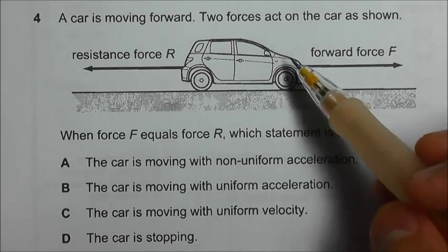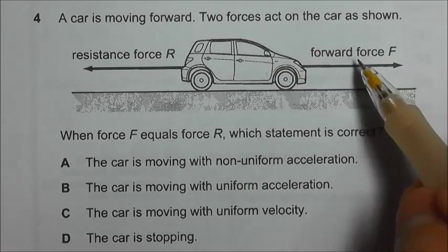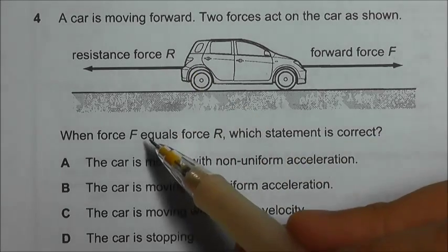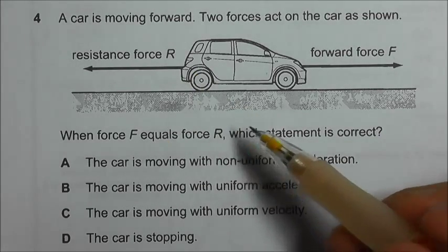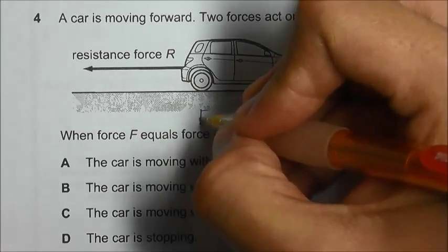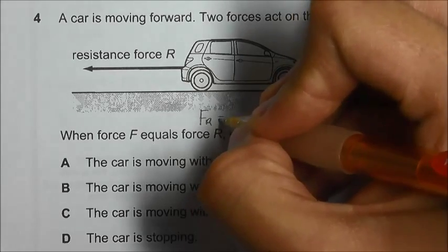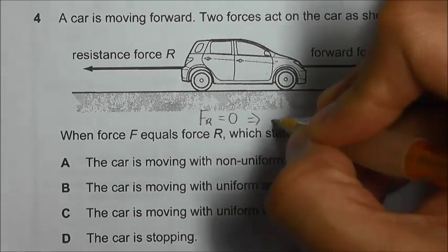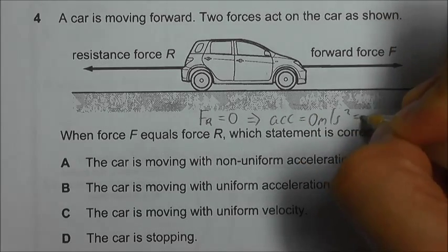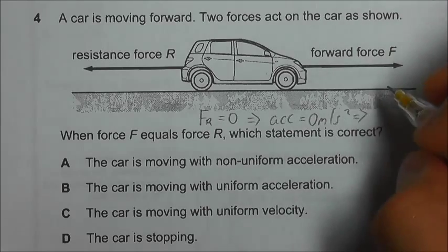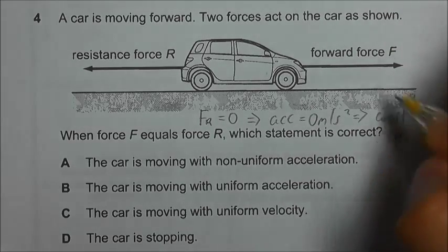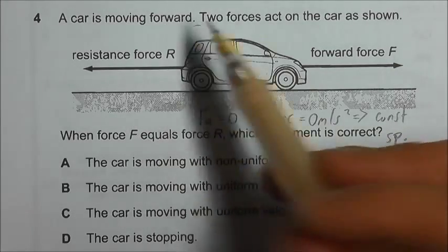There are two forces acting on this car. There's a forward force F and a resistance force R. So when force F is equal to force R, what we are expecting to get is a zero resultant force. That means there will be no acceleration. And we should expect to see constant speed since the car is already moving forward.